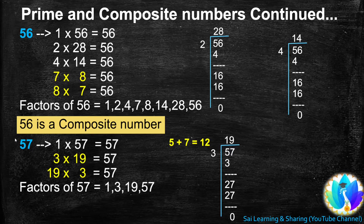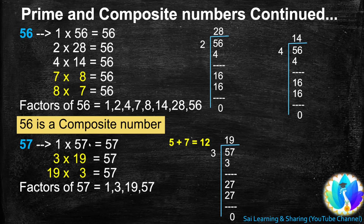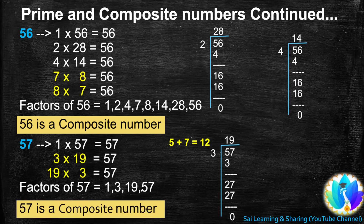57 is not a multiple of 4 or 5. There is no other combination in the tables from 2 to 12. At last, 19 times 3 equals 57. We stop here because 3 and 19 occurred earlier. Factors of 57: 1, 3, 19, and 57. Since 57 has more than 2 factors, 57 is a composite number.